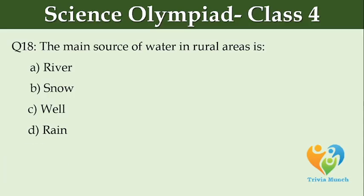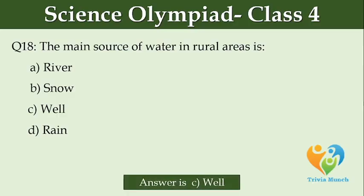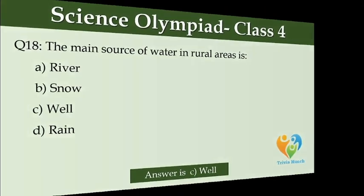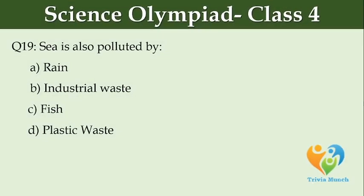Which of the following is a major cause of water pollution? Option A: rain, Option B: industrial waste, Option C: fish, Option D: plastic waste.